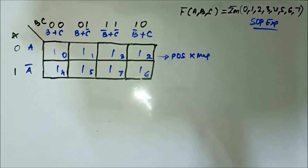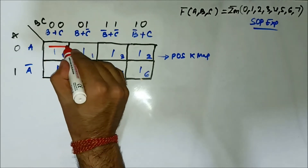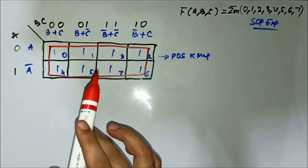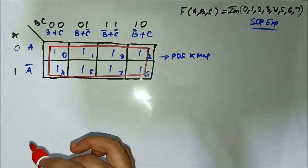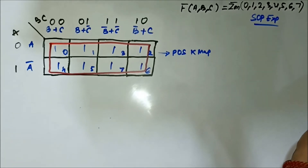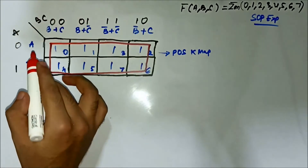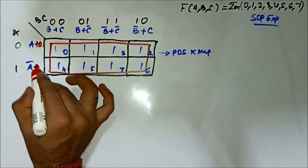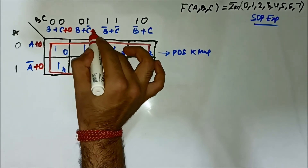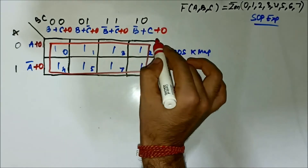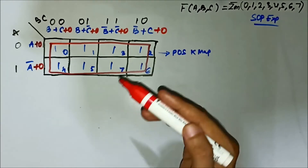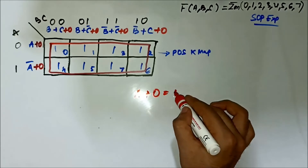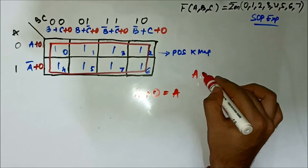One octet will be formed involving all of the cells in this KMAP. In order to identify the common variables from the horizontal and vertical side, if we add zero on the horizontal side and also zero on the vertical side, the values remain unchanged. As per the Boolean algebra rule, if we OR zero with any Boolean variable, its value remains unchanged.